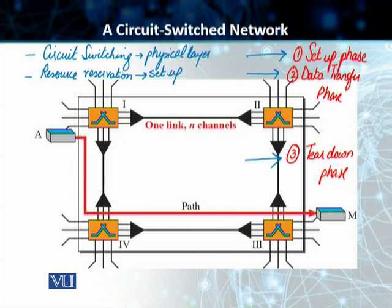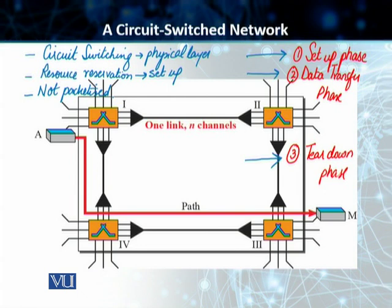Third point: the data is transferred between two sources and it is not packetized. When we talk about virtual circuit switching at the data link layer, that switching occurs using data blocks called frames. In the case of physical layer switching, the data is a continuous flow sent by the source and received by the destination. There may also be periods of silence when the two devices, although connected, have nothing to send to each other.